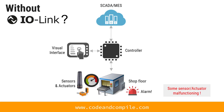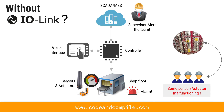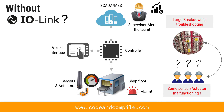What happens when you have an alarm? The supervisor will alert the team, and when the team comes they might see a bunch of issues because there are so many sensors and actuators in a big plant. Sometimes it's hard to troubleshoot, which can confuse the maintenance team and result in a large breakdown with loss of production. This is a very typical case when you work without IO-Link.